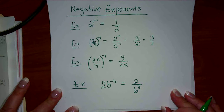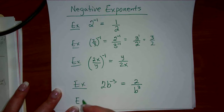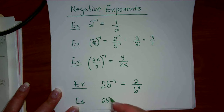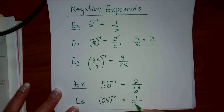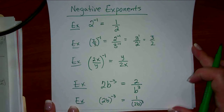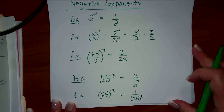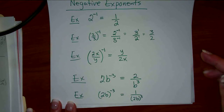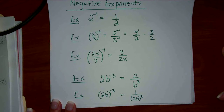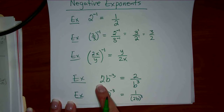How would we move both b and 2 to the bottom? If I wanted both to move, I'd have to write it as 2b all to the negative 3, which would be 1 over 2b cubed. So it doesn't have to be a negative 1 — it could be a negative anything. But what moves either to the top or bottom is only the thing that the exponent is on. You have to be careful that the 2 is not attached to the b — it's 2 times b, so the 2 would stay on top.